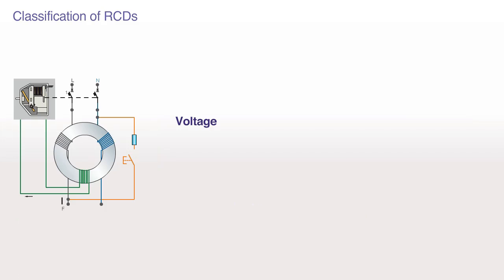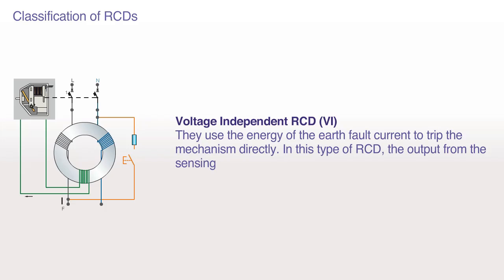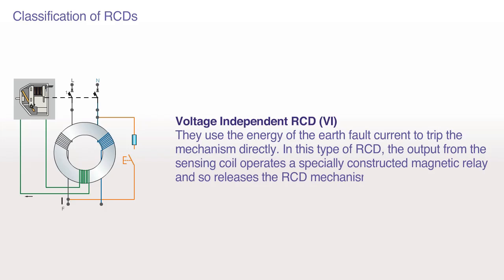Voltage Independent RCD: They use the energy of the earth fault current to trip the mechanism directly. In this type of RCD, the output from the sensing coil operates a specially constructed magnetic relay and so releases the RCD mechanism independently of the mains voltage.